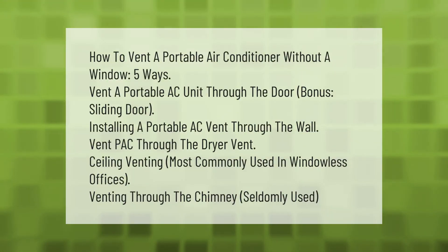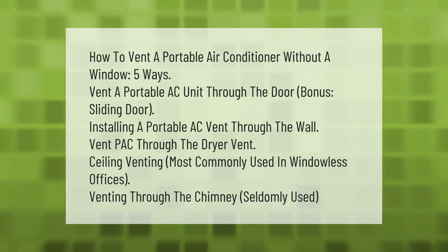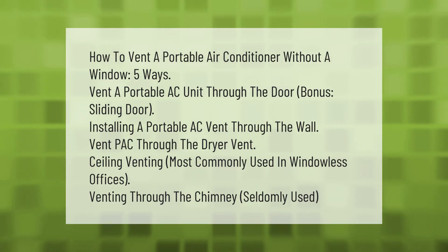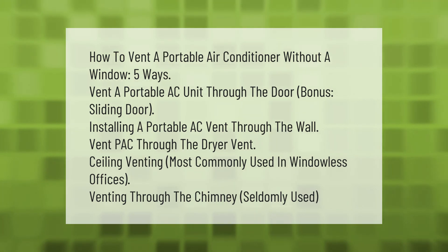How to vent a portable air conditioner without a window — five ways: vent a portable AC unit through the door (bonus: sliding door); installing a portable AC vent through the wall; vent through the dryer vent; ceiling venting, most commonly used in windowless offices; and venting through the chimney, seldomly used. Thank you for watching — please subscribe and hit the bell notification.